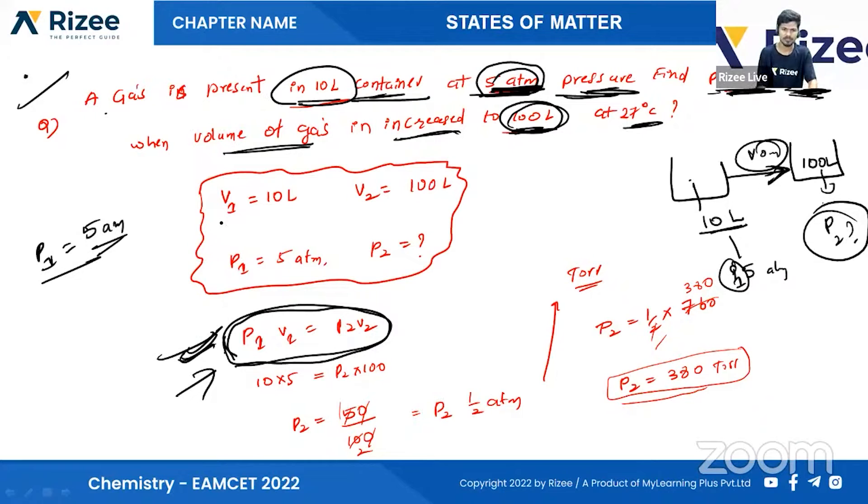V1 is equal to 10 liters, V2 is equal to 100 liters, P1 is equal to 5 ATM, P2 is what we need to find. The formula: P1V1 equals P2V2. So 5 times 10 equals P2 times 100. P2 is equal to 50 divided by 100, which gives us 0.5 ATM.